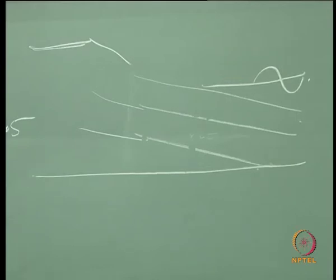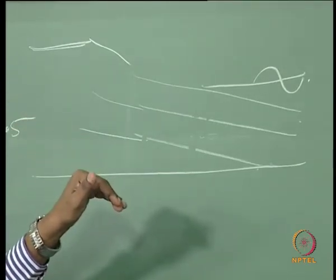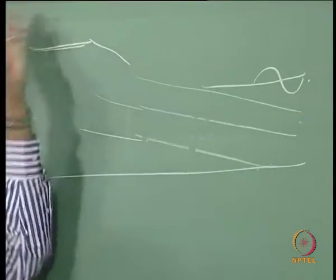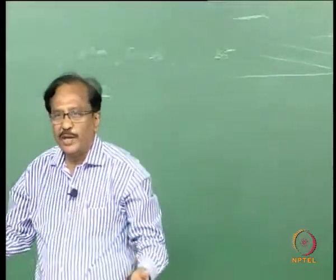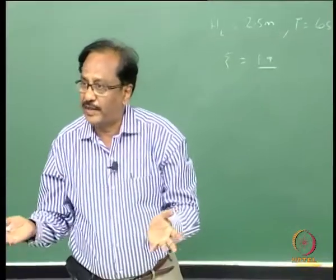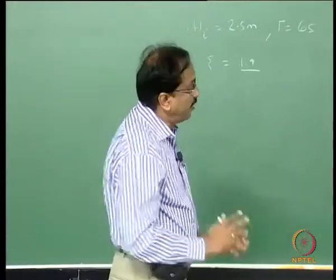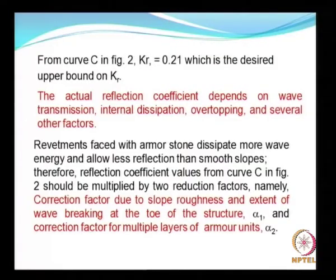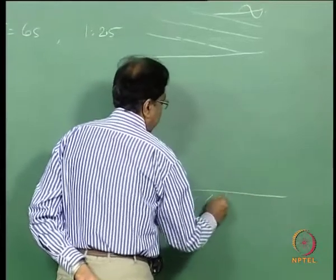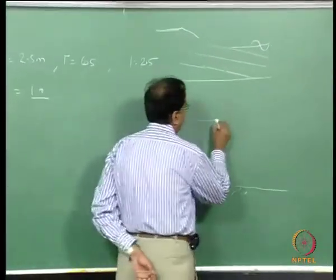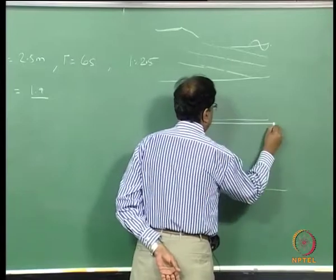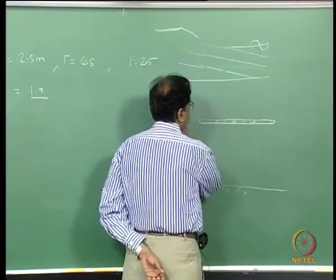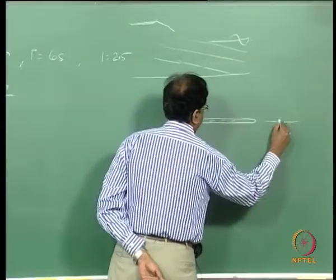If the height of the structure is less, there will be over-topping. If there is over-topping, there may not be much reflection. It also depends on internal dissipation and transmission. For example, a structure may allow energy to pass through, and one such structure is even a floating breakwater, which we will see later when we talk about types of breakwaters.